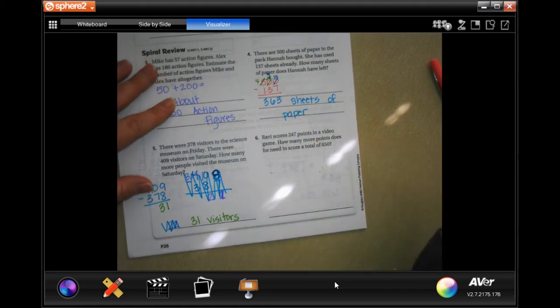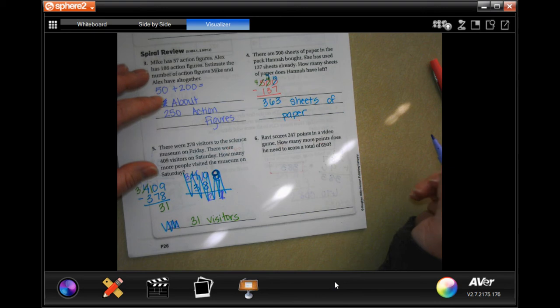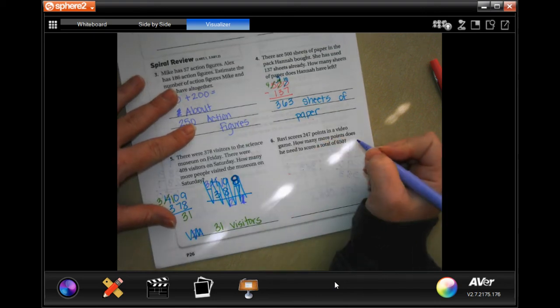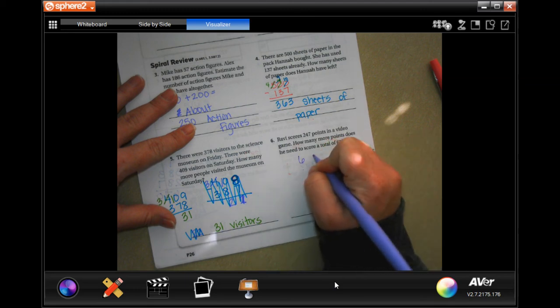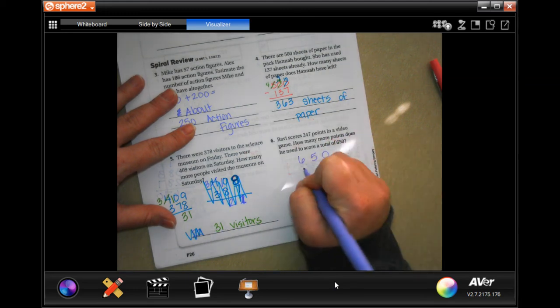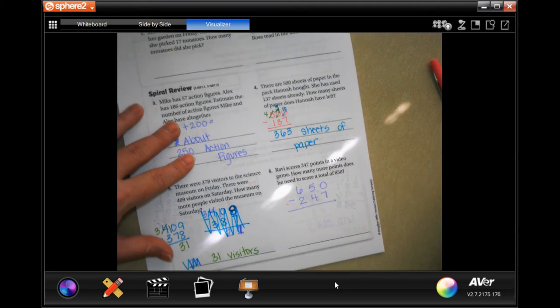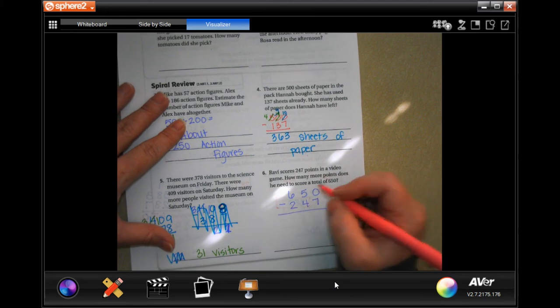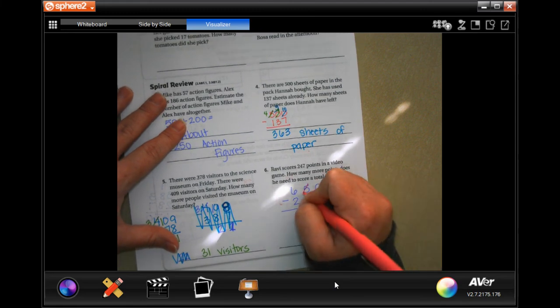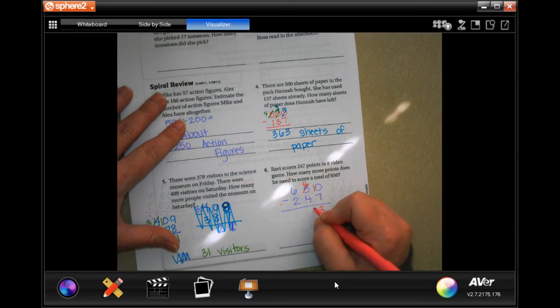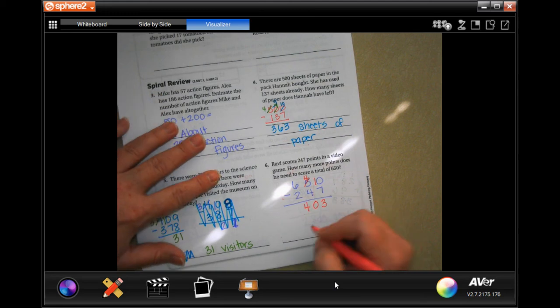Robbie scores 247 points in a video game. How many more points does he need to score a total of 650? So, we still have to find the difference. So, 650 minus 247. So, 0 cannot take away 7. We're going to borrow one, making it a 10. 10 minus 7 is 3. 4 minus 4 is 0. And 6 minus 2 is 4. So, 403 points.